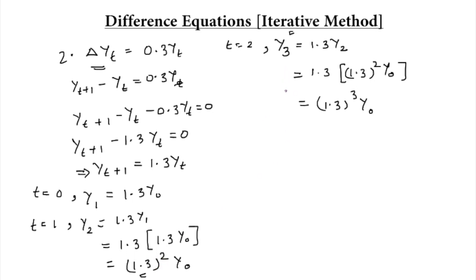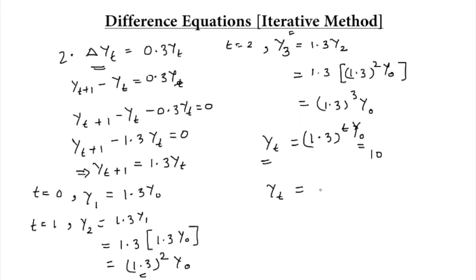If we continue this process and generalize it, the solution can be written as yt is equal to 1.3 raised to the power t times y0. If y0 is given as 10, then the equation becomes yt is equal to 1.3^t times 10. This is the required equation for this type of question.